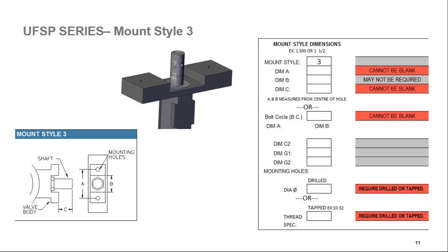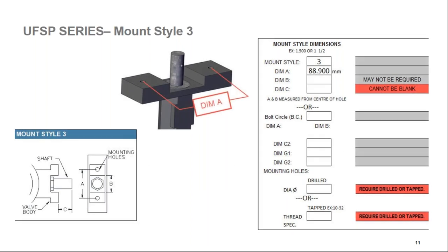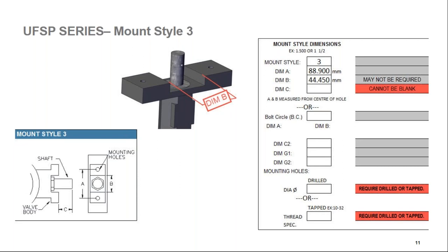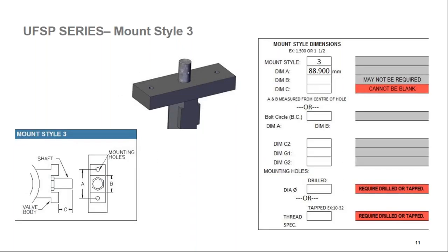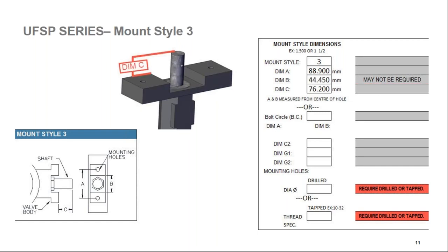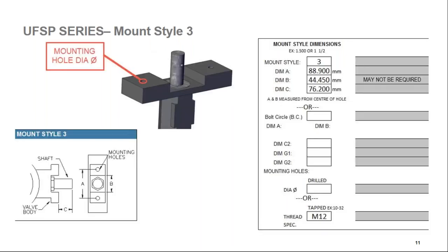Mount style three has dimension A as center of mounting hole to center of mounting hole, and dimension B as the length of the cutout around the shaft. Some valves do not have that cutout, so dimension B may not be required — if that's the case, simply bypass it. Dimension C is the height of the shaft from the top of the shaft to the flange. The mounting hole diameter can be tapped, for example M12.